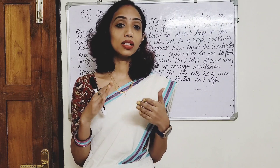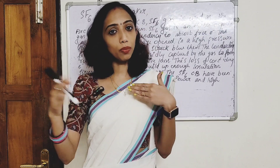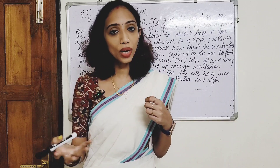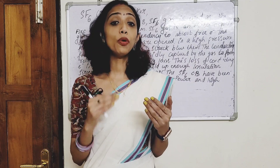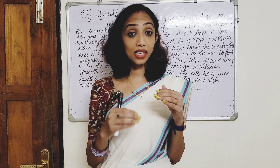In the SF6 circuit breaker, you have two contacts. If you have a short circuit current, the moving contacts open through the medium of SF6 gas — Sulfur hexafluoride.